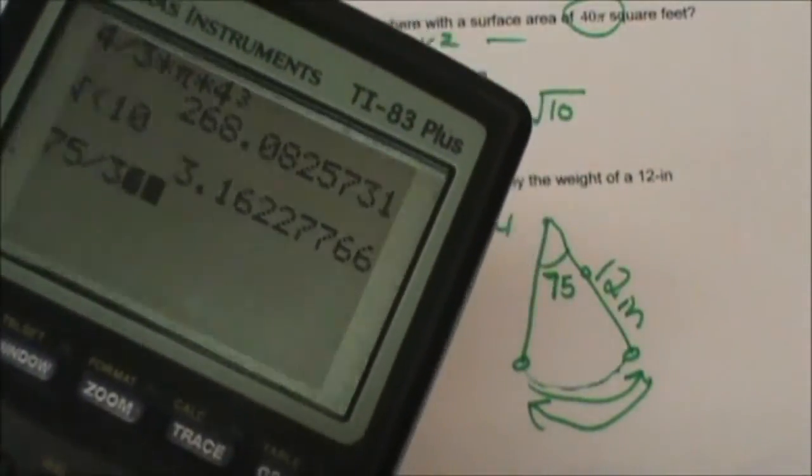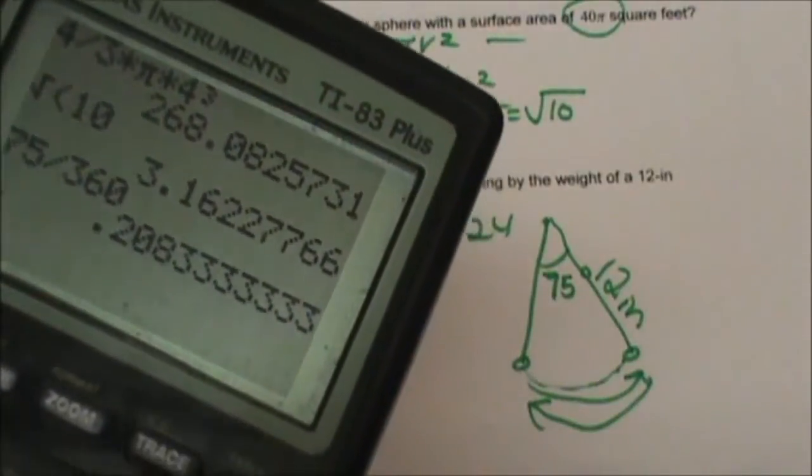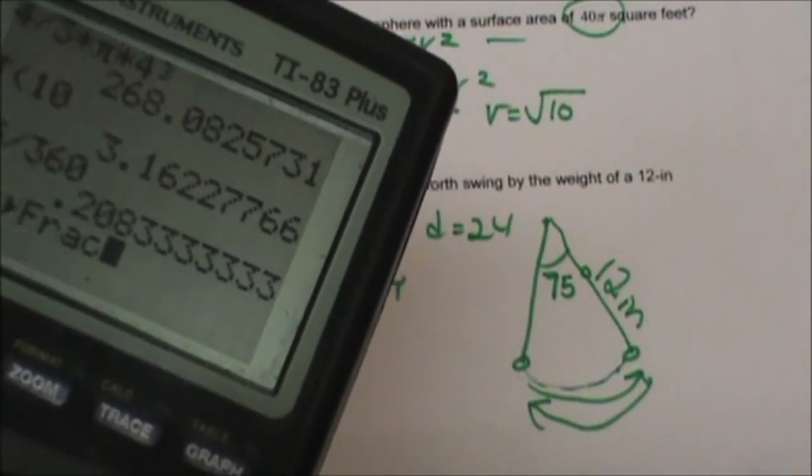75 divided by 360 and we will get that into a nice reduced fraction.